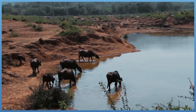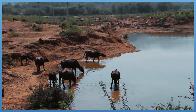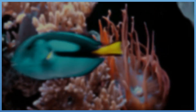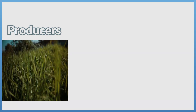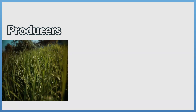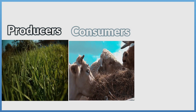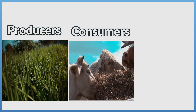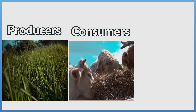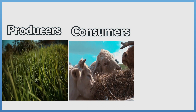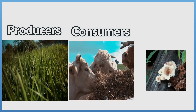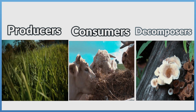Living organisms can be classified into three groups according to their way of feeding, which are: 1. Producers, 2. Consumers, and 3. Decomposers.